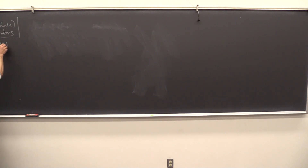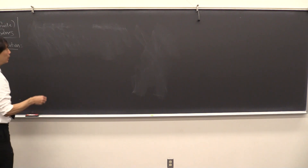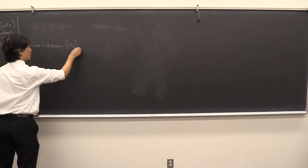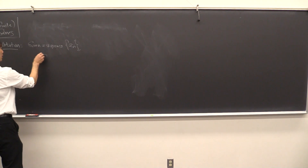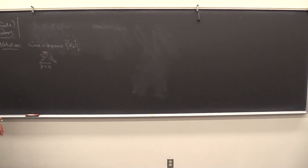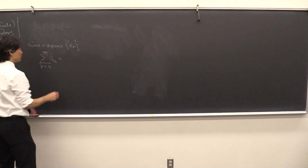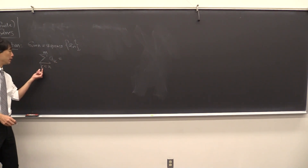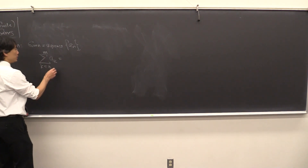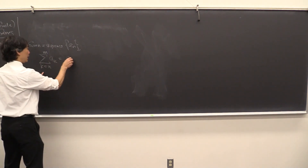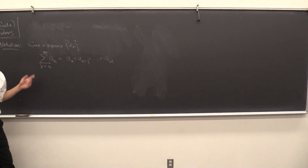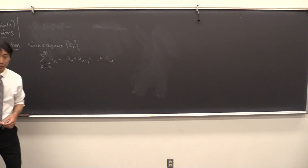So the first thing we need to do is introduce some notation. Given a sequence a_n, when we write the summation of a_k as k goes from n to m, what this means is that you're taking the a_k's as the index k ranges from n to m, and you're adding them together. So this would be a_n, a_(n+1), all the way up to a_m. Hopefully you've seen something like that before.